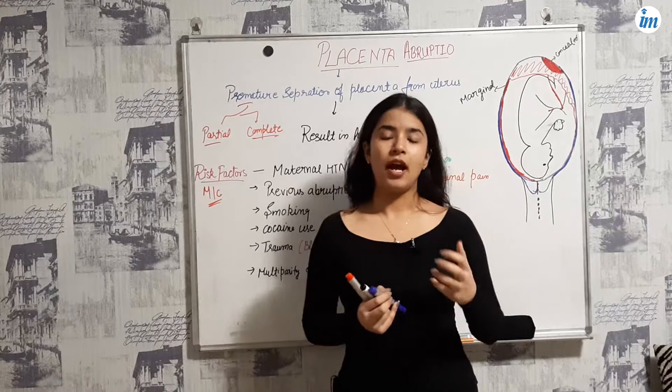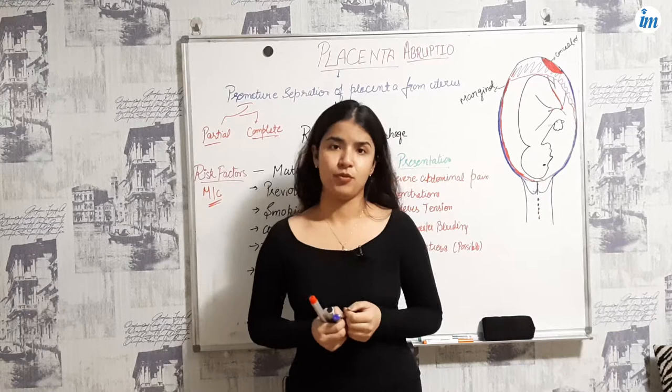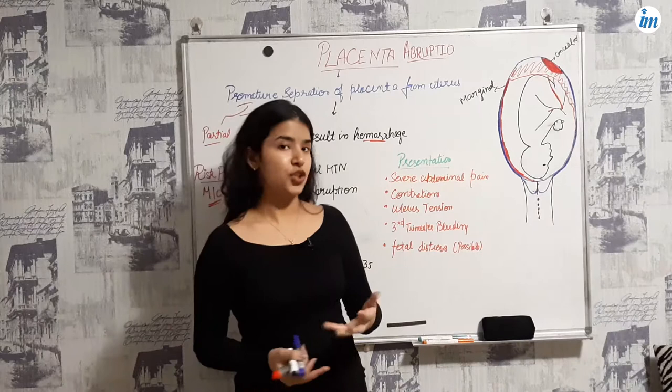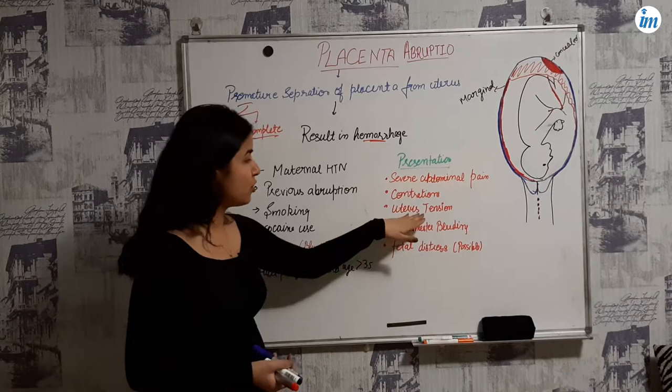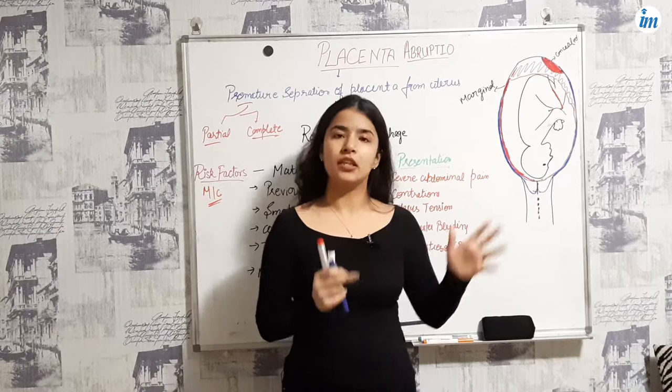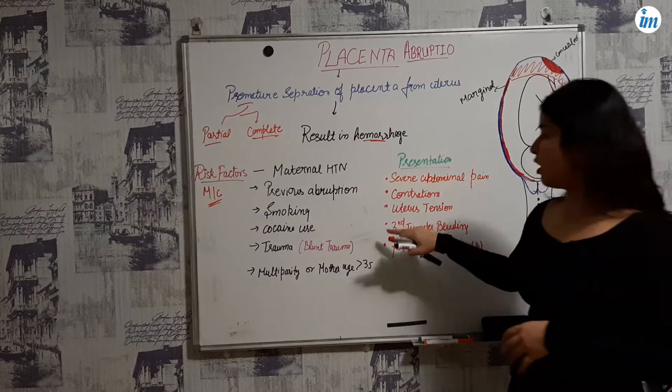Now when a patient comes to you, what is the presentation of a patient with placenta abruptio? The female is having severe abdominal pain, as you can see here. She is having contractions and uterine tension. Uterine tension is mainly because the muscle contracts to stop the bleeding — that's why you will see uterine tension.